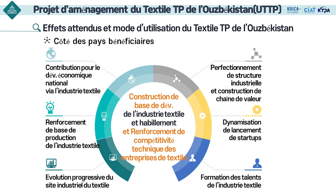Voici les effets attendus et le mode d'utilisation. Du point de vue de l'Ouzbékistan, il s'agit de jeter les bases pour la croissance de l'industrie textile et de l'habillement et de fournir une compétitivité technique aux entreprises textiles ouzbèques. Ce projet permet de contribuer au développement de l'économie nationale à travers le développement du complexe industriel textile, au renforcement de la base de production de l'industrie et à la création d'une dynamisation des start-up et à la formation d'une main-d'œuvre professionnelle.